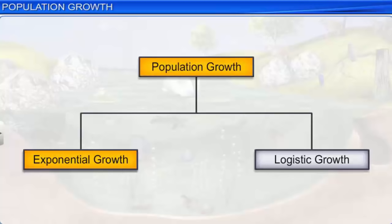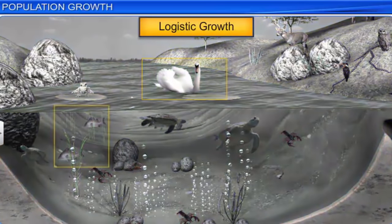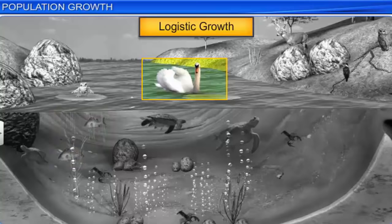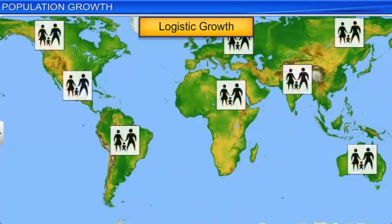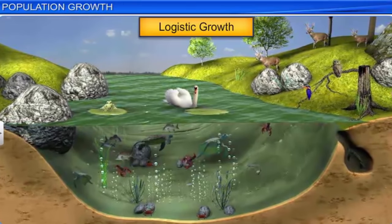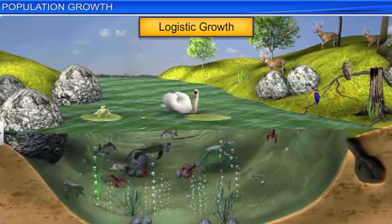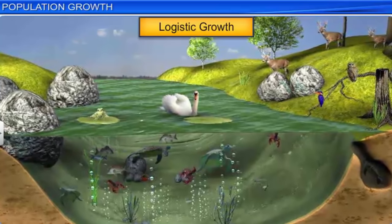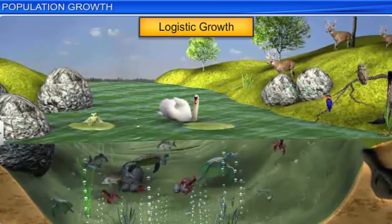However, when resources are limited, the population growth pattern is logistic. There is always competition between individuals for limited resources, and finally the fittest individuals survive and reproduce. Keeping this fact in mind, the governments of many countries have introduced various restraints to limit human population growth. In fact, in nature, a given habitat has sufficient resources to support a maximum number of individuals, beyond which no further growth is possible. This maximum capacity or limit is called the carrying capacity of the species in that habitat, which is denoted by the letter K.